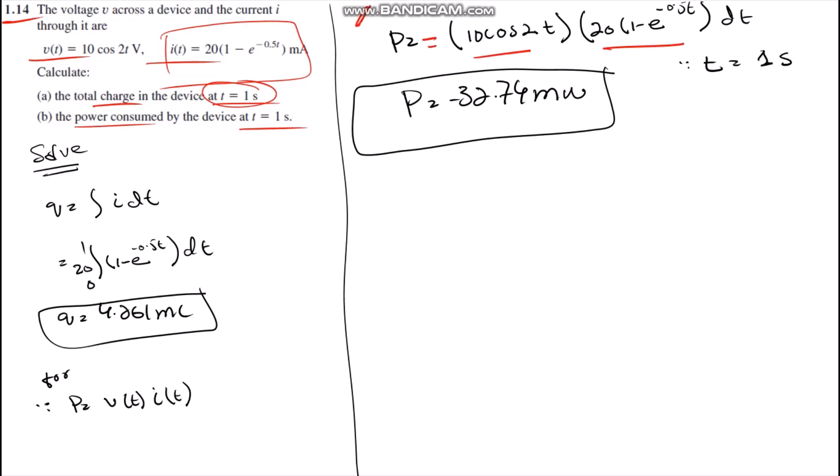Now in part B the question is asking to find the power consumed by the device at time equals one second. We know the equation of power p equals vi. In the question the voltage and current are given so we simply put the values of current and voltage in the equation.